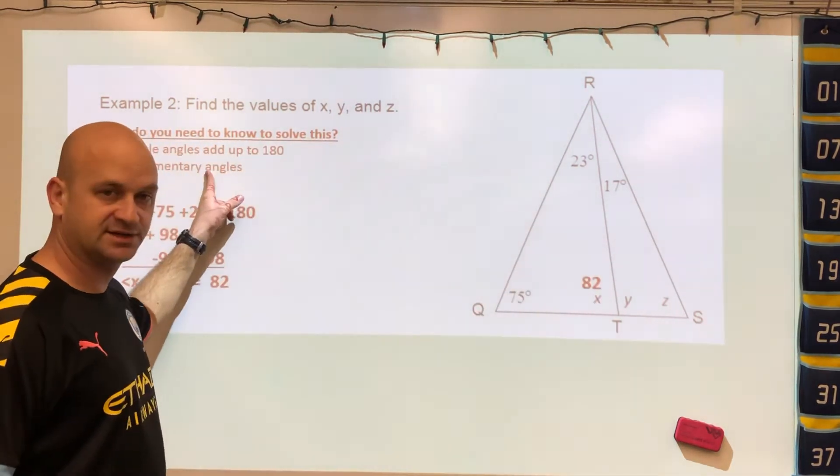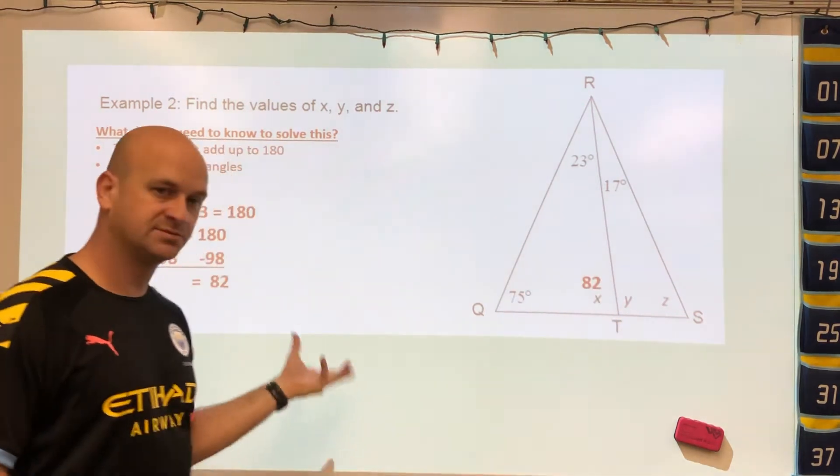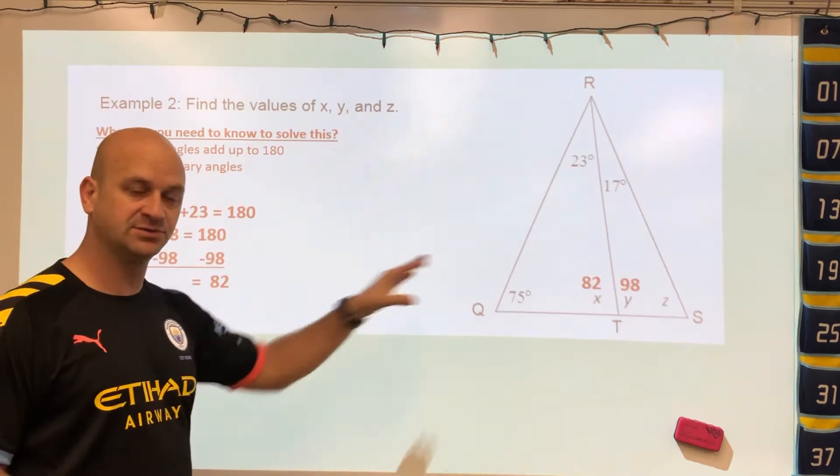Earlier we said that these are supplementary, so how would we find angle Y? Supplementary angles add up to 180, so if you take 180 minus 82 you would get 98.